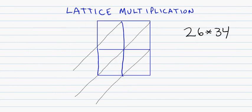Let's look at a lattice multiplication problem where we have 2 digits times 2 digits. If I'm looking at 26 times 34, I'm going to put one number up here above the lattice grid, 26, and then one number on the side here, 34.